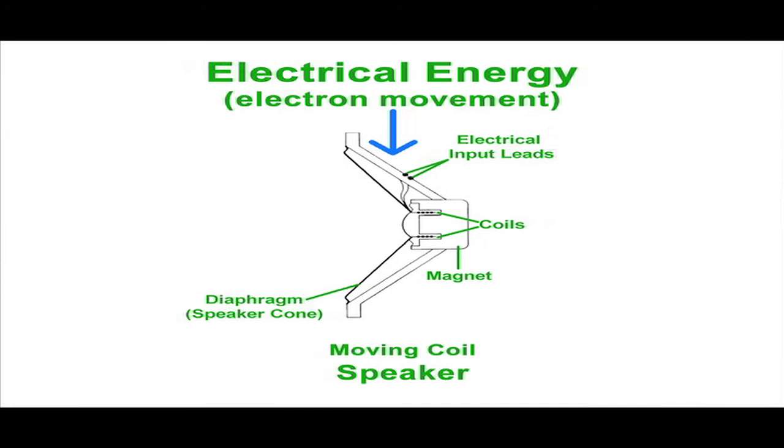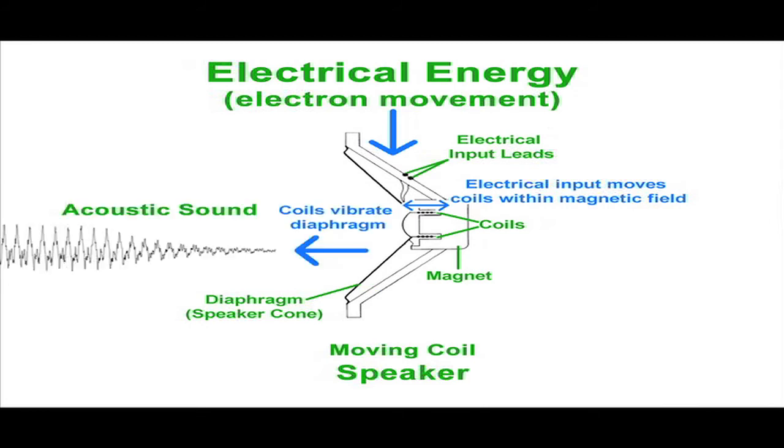Instead of acoustic pressure moving a diaphragm and coil, electrical signals cause the coil to move within the magnetic field. The coil vibrates the diaphragm, or speaker cone, which moves air molecules, generating acoustic sound pressure.